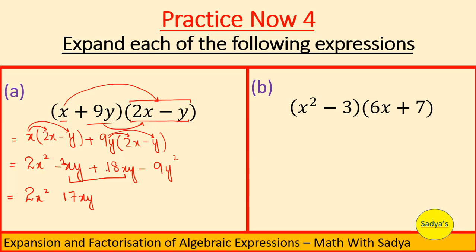And since we write the sign of the bigger number with the answer, out of 1 and 18, 18 is the bigger number and 18 is positive. So we will write positive with 17xy. And the last term is minus 9y square which we will write as it is. Now we don't have any like terms, so this means this is the answer. This is the expanded form of the question. Let's move to b part now.